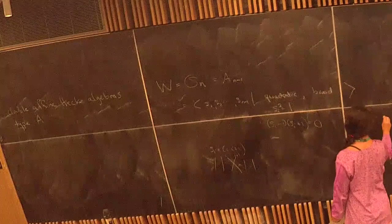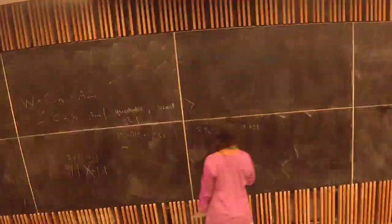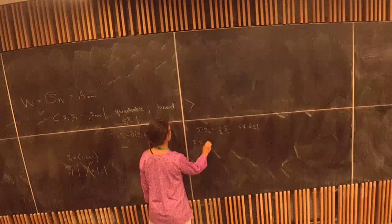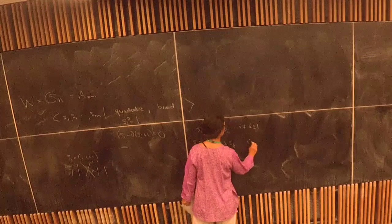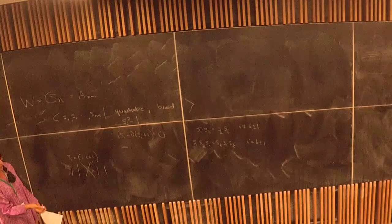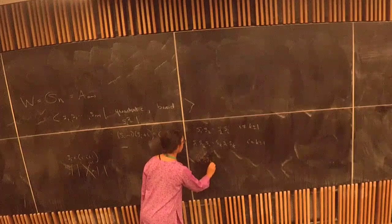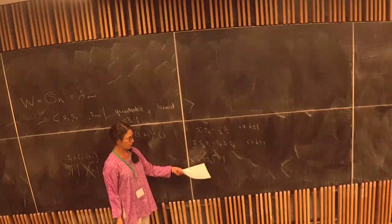I prefer to write the braid relations in the form s_i s_k s_i = s_k s_i s_k rather than as a relation (s_i s_k)^m = 1, because I want to think of the symmetric group as a quotient of the braid group. In the braid group, a product of elements equals a product of elements — you don't say something has finite order. Far apart indices commute (m=2), adjacent indices satisfy the length-3 braid relation (m=3).